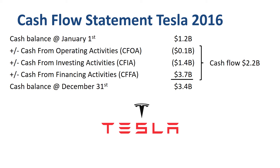Now we go one level deeper, discussing each of the cash flow categories. Cash from operating activities will take the vast majority of the attention. Cash from investing activities and cash from financing activities are fairly straightforward for Tesla in 2016.